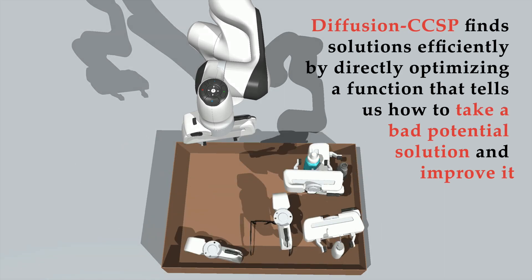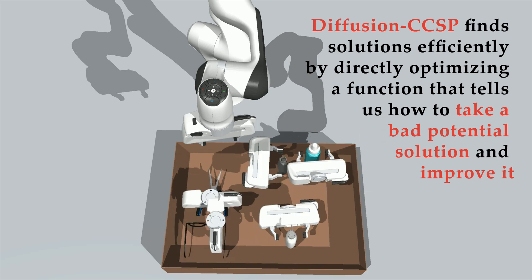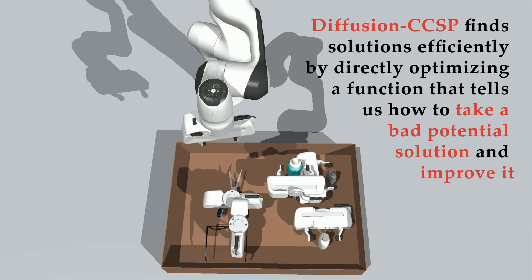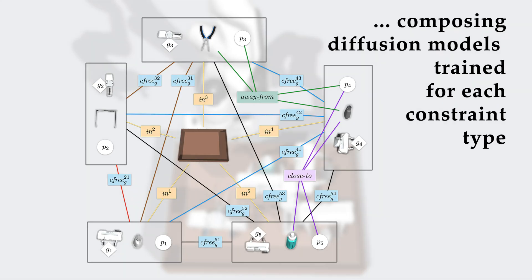Our method, DiffusionCCSP, finds solutions efficiently by directly optimizing a function that tells us how to take a bad potential solution and improve it, composing diffusion models trained for each constraint type.